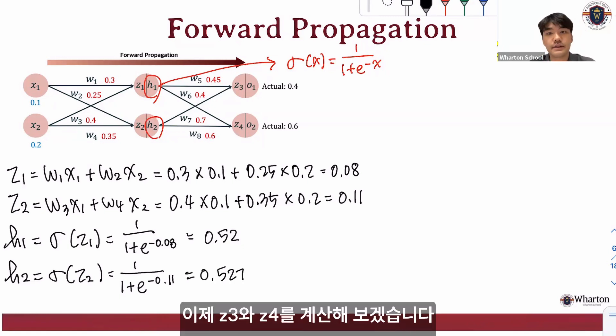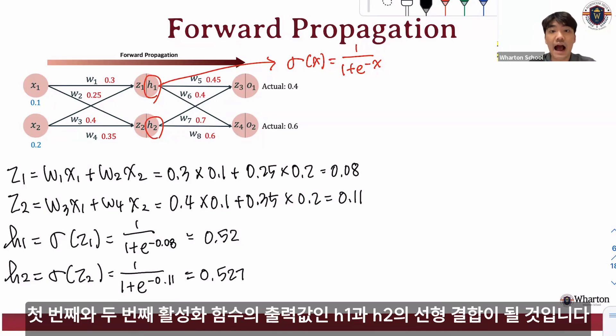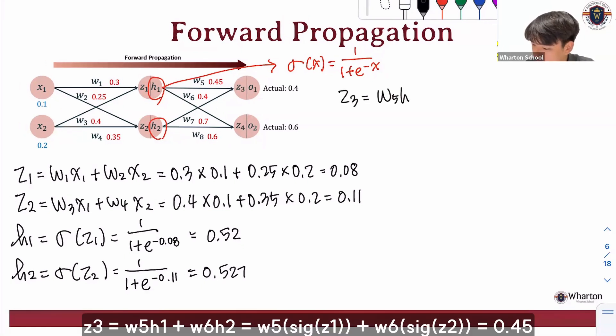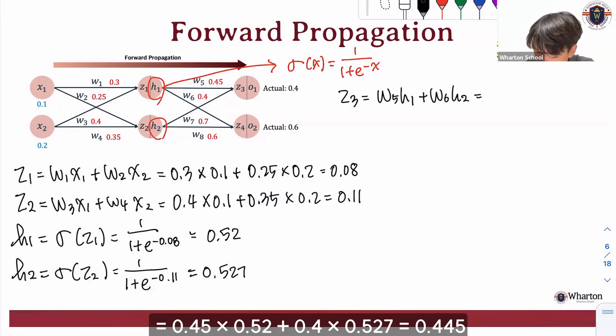And let's calculate z3 and z4. Z3 will be the linear combination of the fifth and the sixth weight and the output of the first and the second activation functions. Here, we just got h1 and h2. So we can use these. Let's calculate z3. w5 h1 plus w6 h2, which is 0.45 multiplied by 0.52 plus 0.4 multiplied by 0.527.